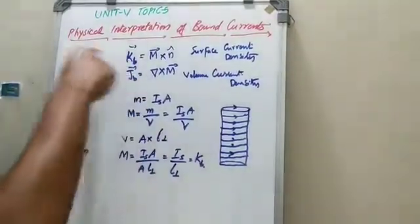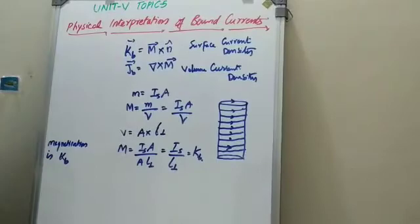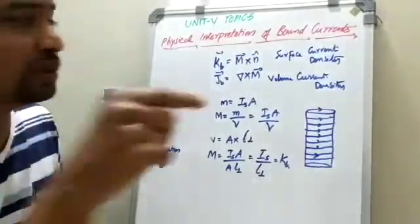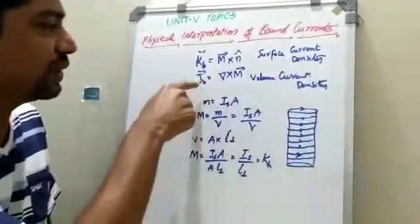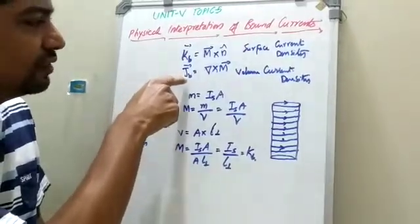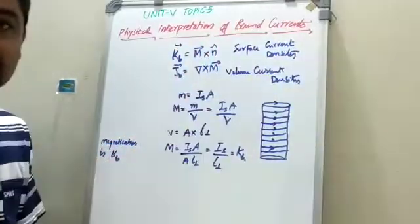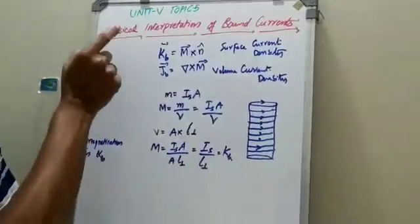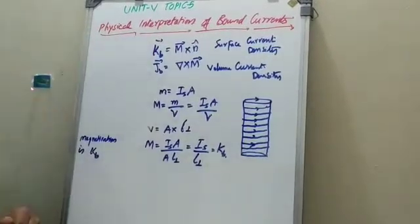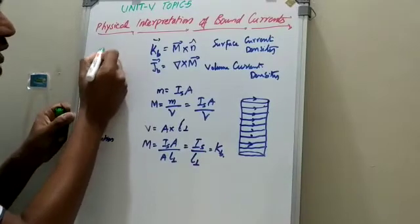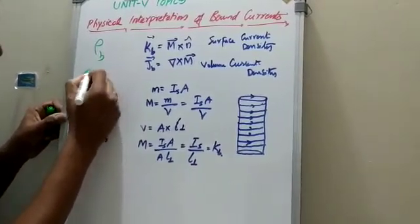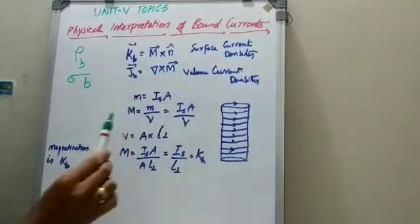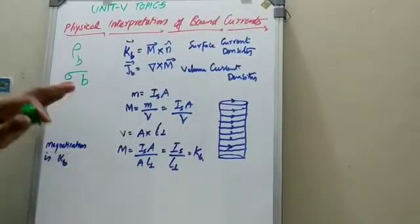We are going to the last session. The physical interpretation of bound currents is the last topic we discussed. There are two bound currents: surface current density and volume current density. These are similar to the bound charges in electrostatics — surface bound charges and volume bound charges correspond to surface current density and volume current density.